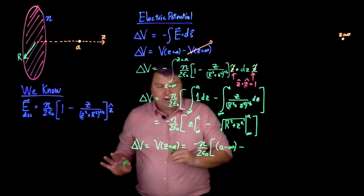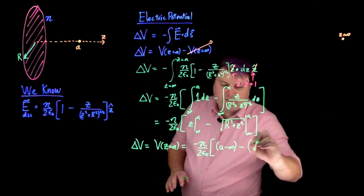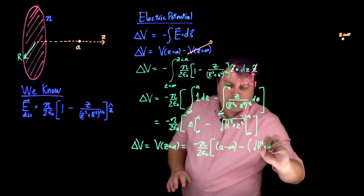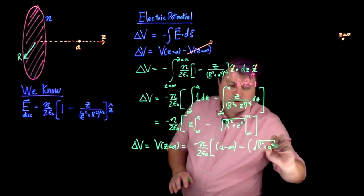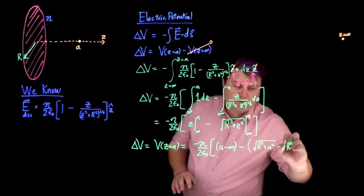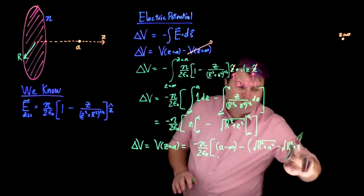And then this one becomes a minus infinity. Minus, don't worry, we'll get rid of all this stuff soon enough. And then we have square root of r squared plus a squared minus square root of r squared plus infinity squared.